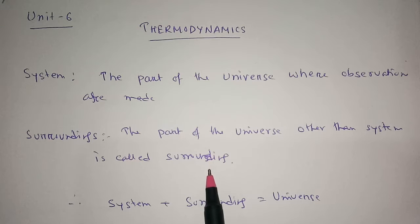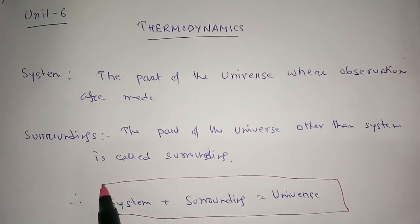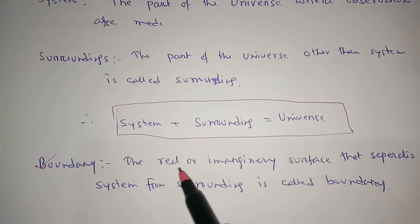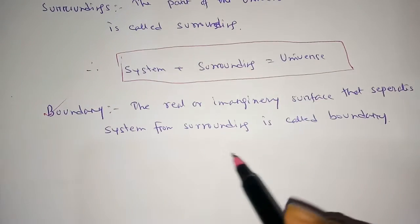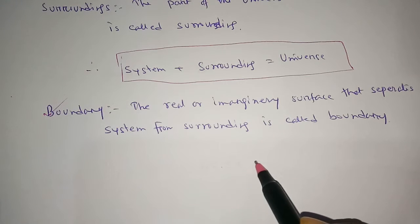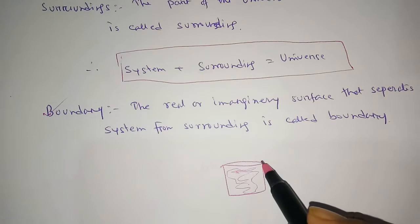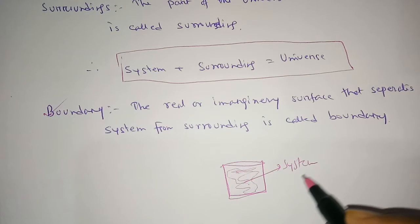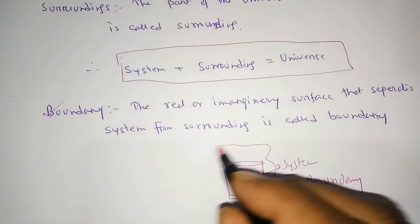If you exclude the system from the universe, you get the surrounding. So: system plus surrounding gives you the universe. Then another term is called boundary — the real or imaginary surface that separates the system from the surrounding. For example, if you have water in a beaker, the water is your system, the beaker is your boundary, and the outer part is called the surrounding.